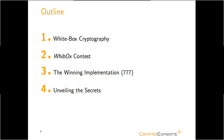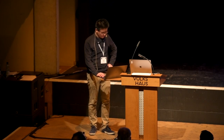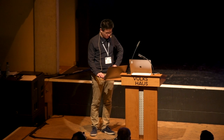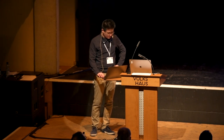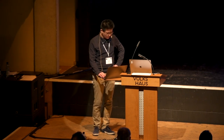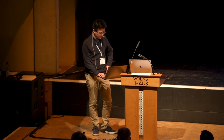This talk consists of four parts. First, we give a brief introduction of white-box crypto. Then we overview the white-box contest, and then we have a look at the winning implementation of this contest, which is the obscure implementation. In the last section, we reveal the secrets inside of it.